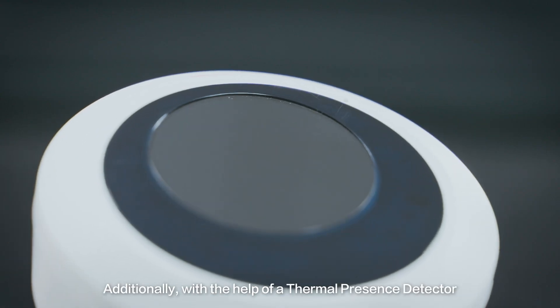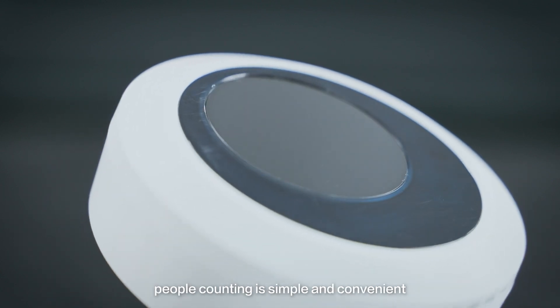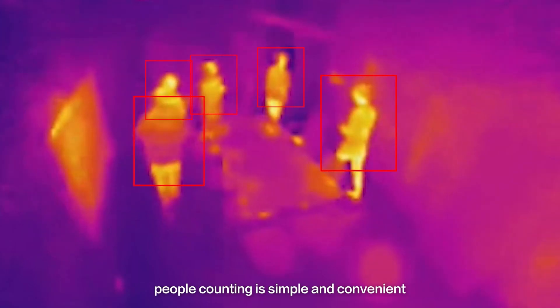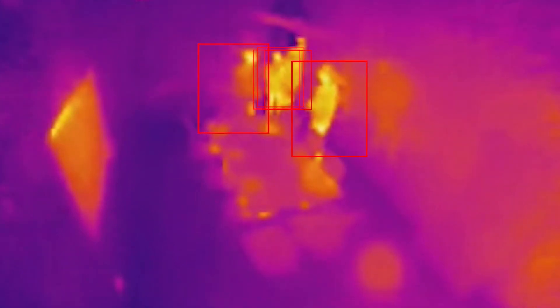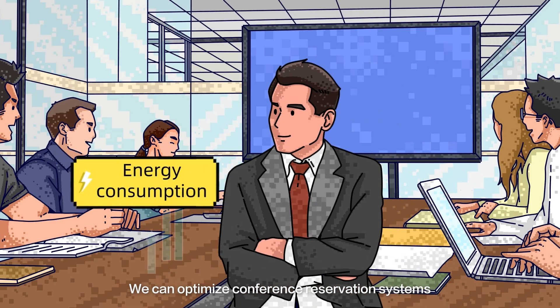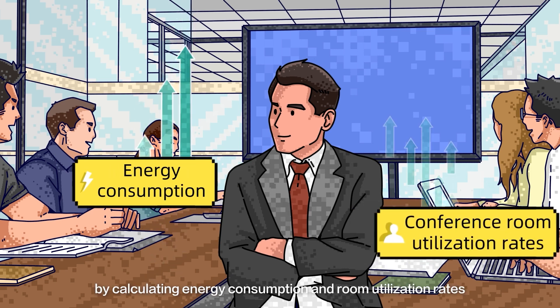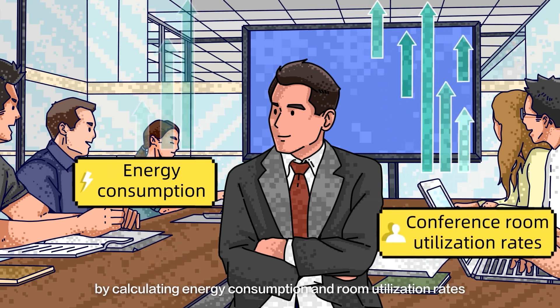Additionally, with the help of a thermal presence detector, people counting is simple and convenient. It can send alerts when the occupancy limit has been reached. We can optimize conference reservation systems by calculating energy consumption and room utilization rates.